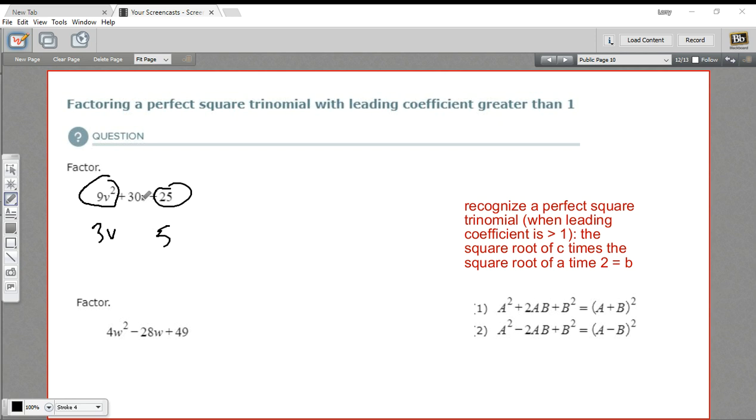If you've got that, the next thing to do is to check the middle term. If you multiply these two together, so multiply those together and multiply them by 2, they should equal that. So here, 3v times 5 is 15 times 2. That equals 30v.